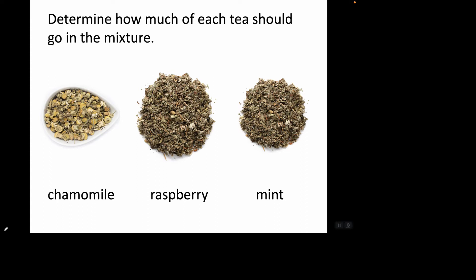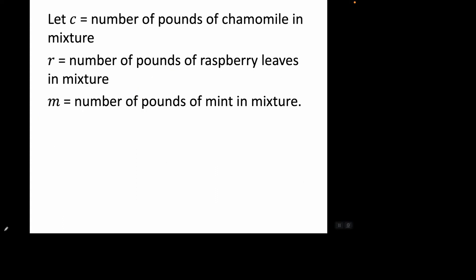Determine how much of each tea should go in the mixture: chamomile, raspberry, and mint. Let's choose our variables accordingly. Let C equal the number of pounds of chamomile in the mixture, R equal the number of pounds of raspberry leaves, and M equal the number of pounds of mint.